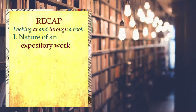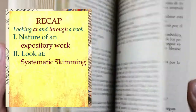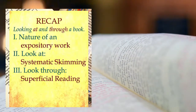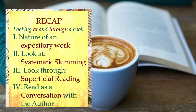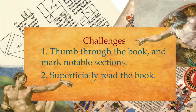Let's recap. In this video, we explored looking at and then through a book by first going over the nature of an expository work. Then we explored how to look at a book by systematically skimming its contents, and then to look through a book by superficially reading it. Finally, we looked at approaching great books as a conversation with the author. Like in the last video, I'm offering two challenges before going on to Part 3. Challenge one: thumb through the book and mark notable sections. Challenge two: superficially read the book.